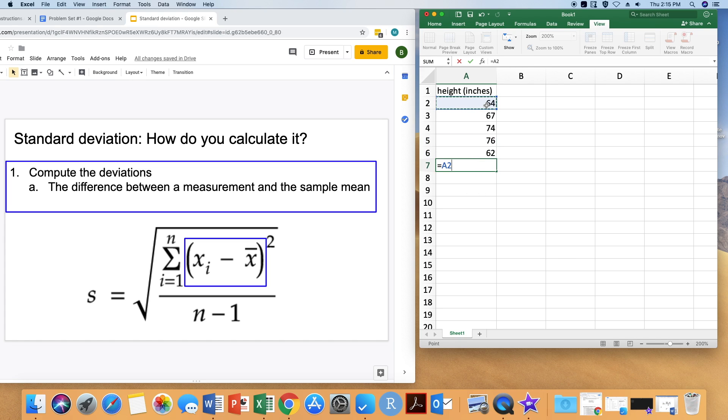So in Excel we hit equals and then we can select each of these numbers and add them together. And then we're going to get the total. And then because we have five observations we're going to divide that total by five to get our arithmetic mean. So that's our mean. We're going to make it bold just so it stands out to us.